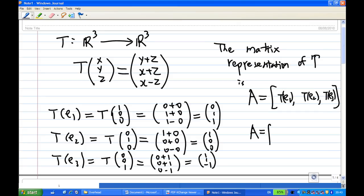This will give me the first column is (0, 1, 1), the second column is (1, 0, 0), and the third column is (1, 1, -1). Then finish the recording.